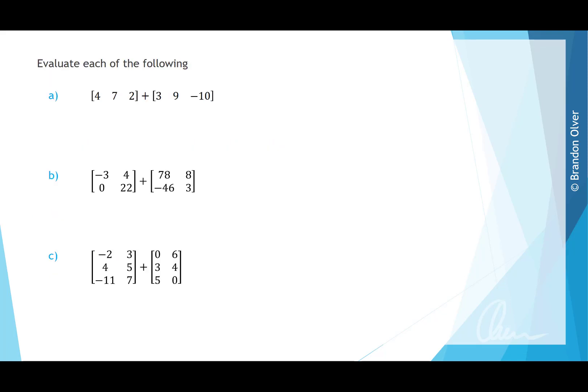For this example we evaluate the following matrix additions. For the first one, the two matrices have the same order, so we add each corresponding entry: 4 plus 3 is 7, then 7 plus 9 is 16, then 2 plus negative 10 is negative 8. That is the resultant matrix.